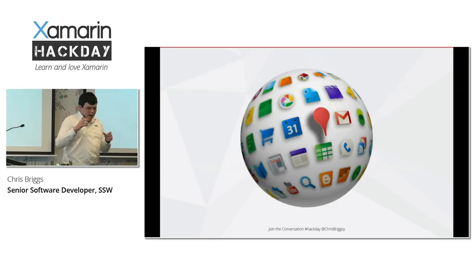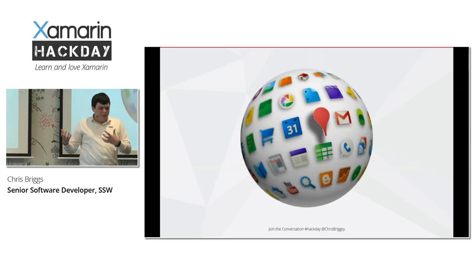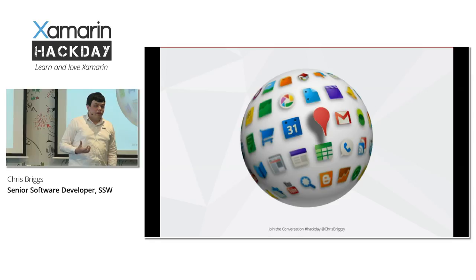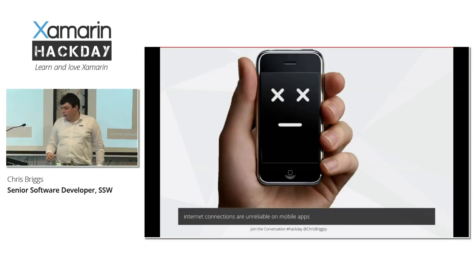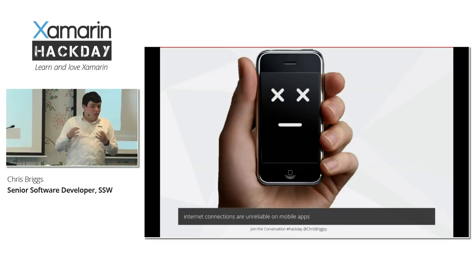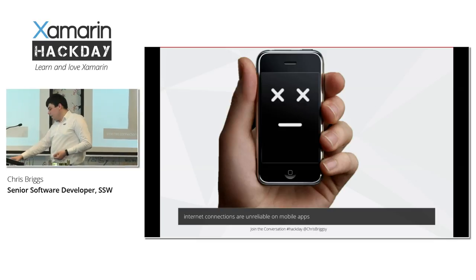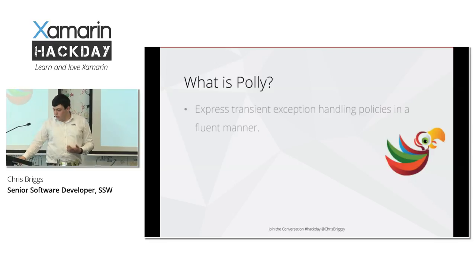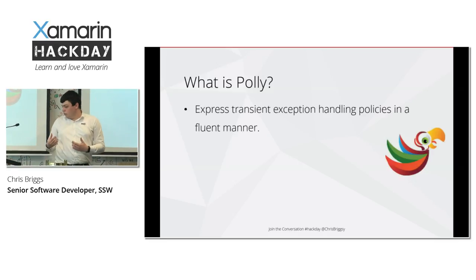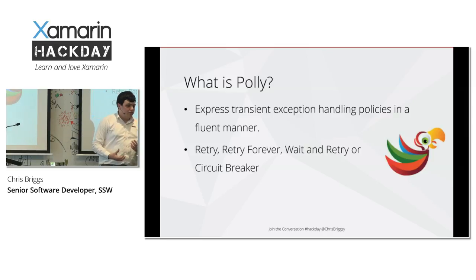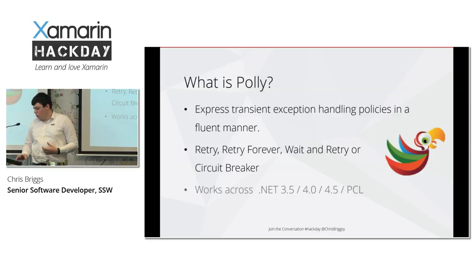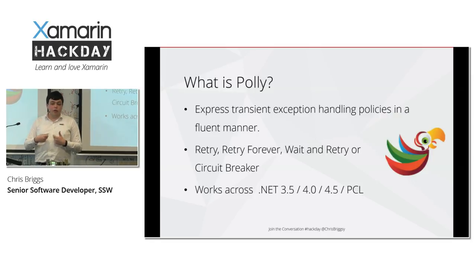Apps have got this great trend where more and more they're consuming a web resource — they feel like they're part of the internet. But what we come to realize is that these internet connections, in the wild, are horribly unreliable. The solution to that is to use a library called Polly. What Polly does is it lets us express transient exception handling policies in a fluent manner. It lets us put strategies in place such as retry, retry forever, and circuit breaker patterns, so that when we get these little networking hiccups, our application doesn't fall over — it will respond, degrade gracefully, work itself out, and move on.